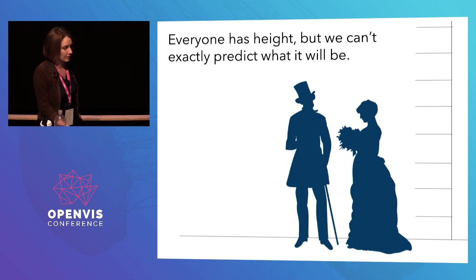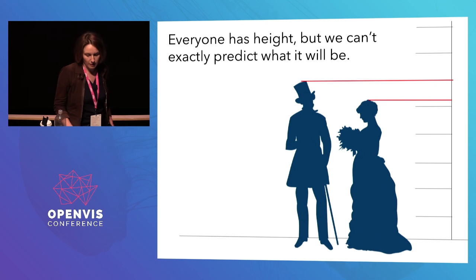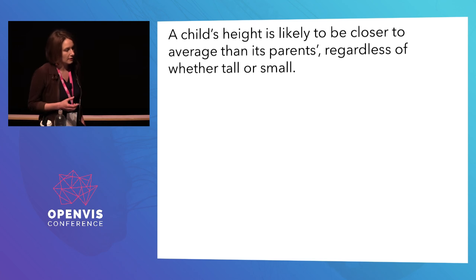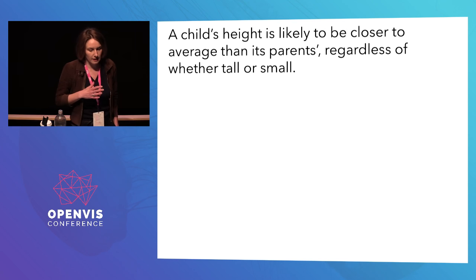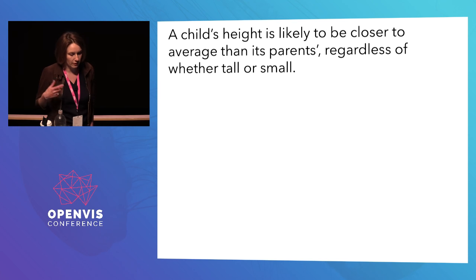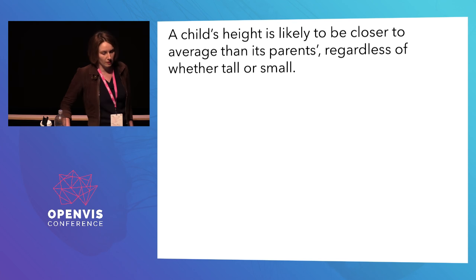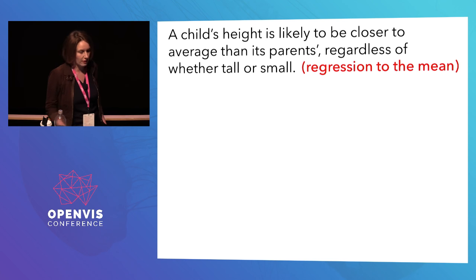So Galton actually starts measuring people's heights — measuring families with children, trying to figure out the set of possible heights. He has about 1,000 people that he measures. He figures out, for instance, that when you have parents who are unusually tall or small, the child's height is actually often closer to average — and this happens on both sides. Similarly, if you have a child that's unusually tall or small, their parents tend to be closer to average. This is what we call regression to the mean.